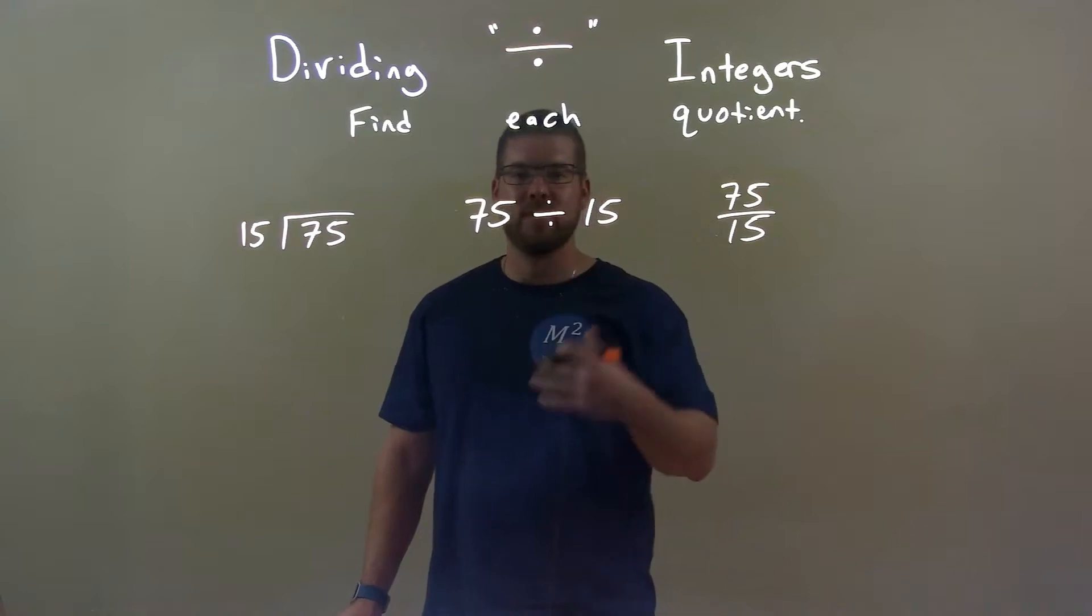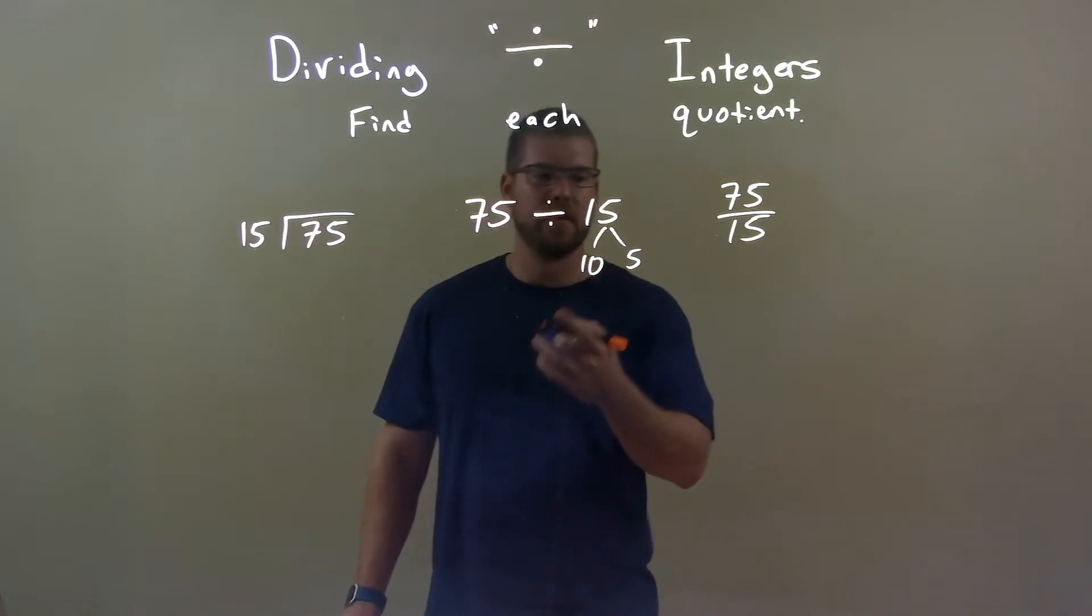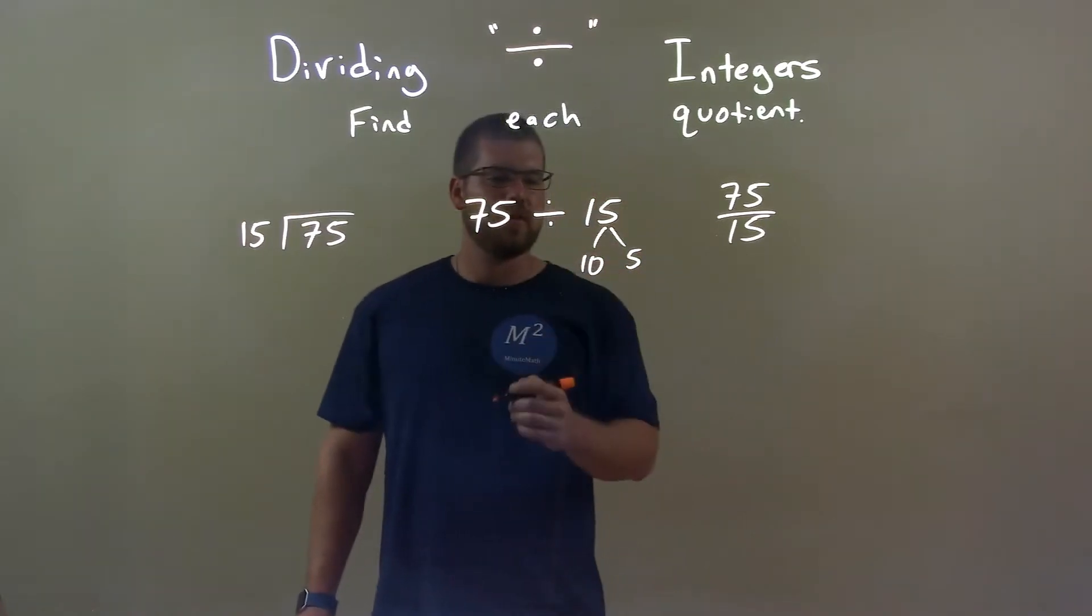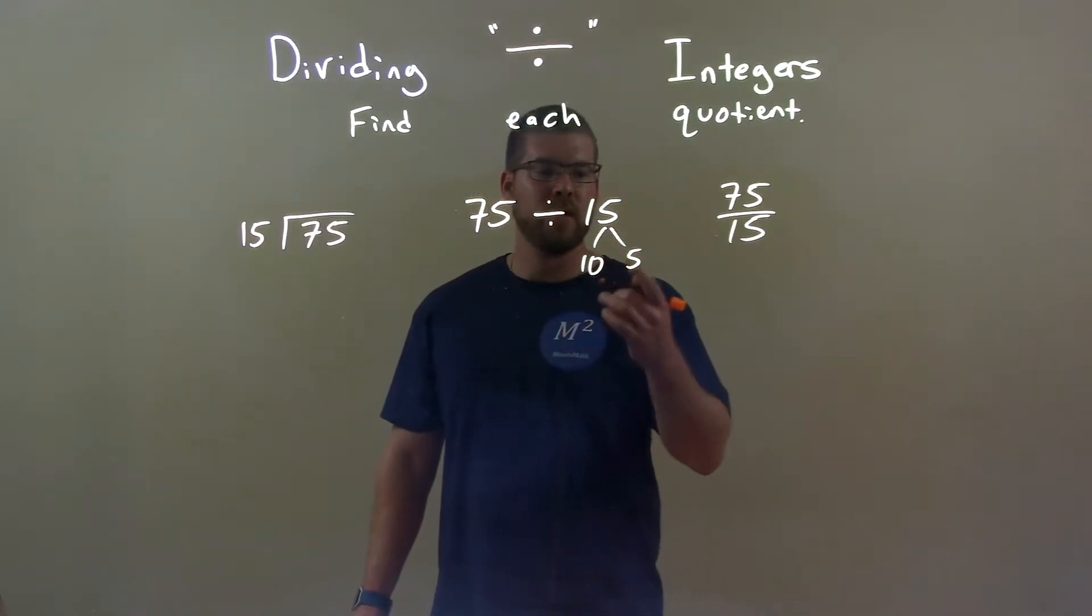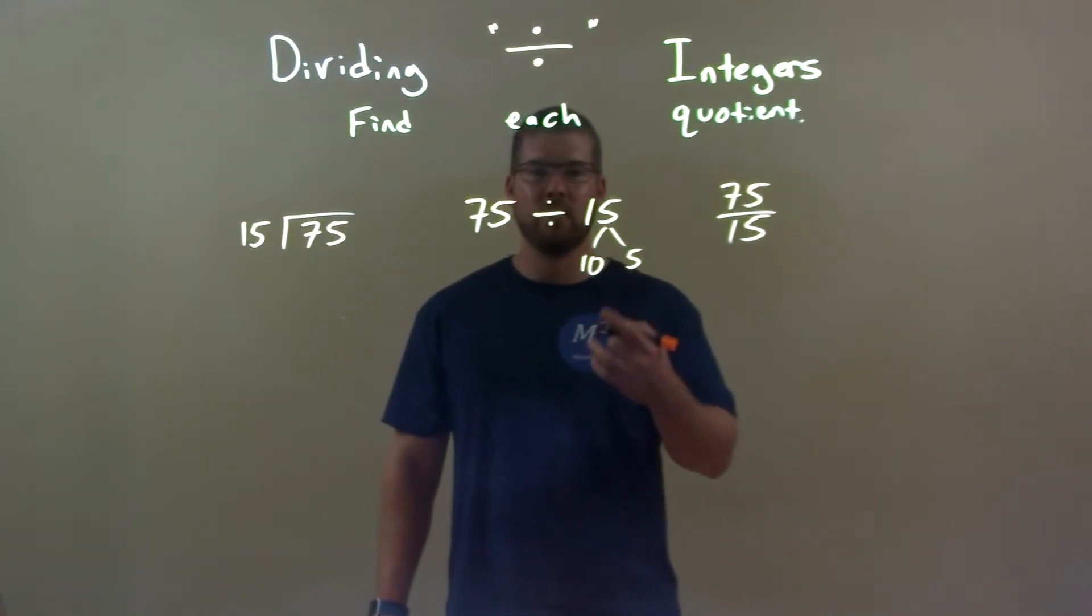5. 5 times 15, what is that? Well, I kind of break 15 down to be a 10 and a 5. 15 is 10 plus 5. Well, 10 times 5 is 50, and 5 times 5 is 25. 50 plus 25 is 75.